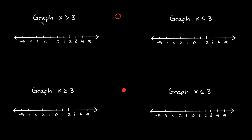Going back to this one: it says graph x is greater than 3, or x is bigger than 3. If we're going to graph this on the number line, we're going to use an open circle at the number 3 right here. Since x is greater than 3, we're just going to draw our line going in this direction, because in this direction all the numbers are greater than 3. And if you notice, this direction is headed in the positive infinity direction.